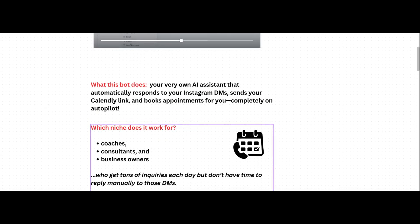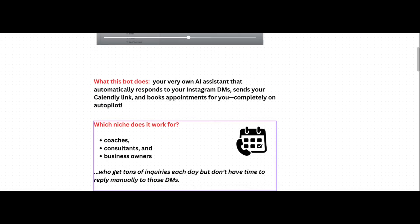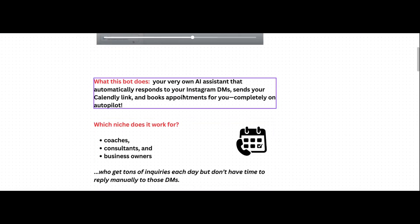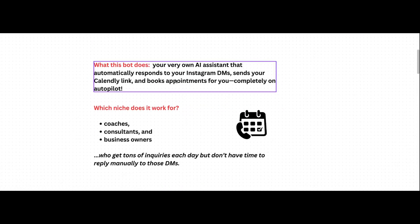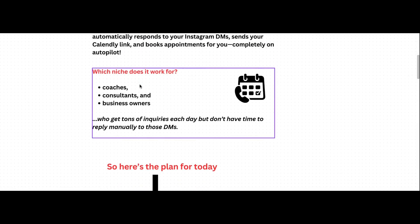Before we get into the actual demo on how to build it, I'm just going to give you a very brief description on what you're actually learning here. This automation is pretty much like having your very own AI assistant that automatically responds to your Instagram DMs, sends Calendly links to potential prospects or leads, and also books appointments for you completely on autopilot.